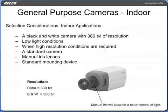The main consideration for indoor applications is generally a black and white camera with 380 TVL of resolution. When selecting a camera, it is important to consider low light conditions when high resolution is required. The camera should also be standard, have a manual iris lens, and a standard mounting device.